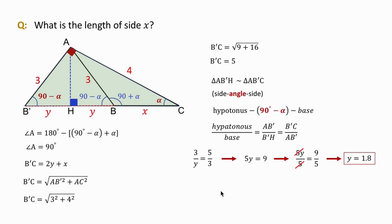On the other hand, we found that B'C, which is 5, is equal to 2y plus x. Since y is 1.8, we find the lengths of x as 1.4.